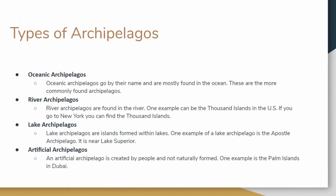Our third section covers the types of archipelagos. There are four types. The first one is oceanic archipelagos, and as the name suggests, these are mostly found in the ocean. These are the more commonly found archipelagos — meaning these are the most frequently formed type.